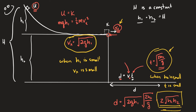Looking at the units of the final answer: H1 and H2 are both in meters, so their product is meters squared, and taking the square root gives meters. That checks out since D should be in meters. Checking units is one of those things that helps determine whether a given equation makes reasonable sense.